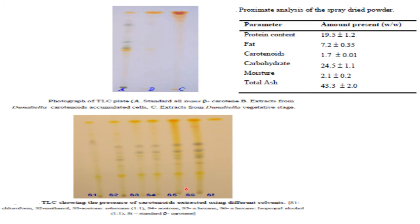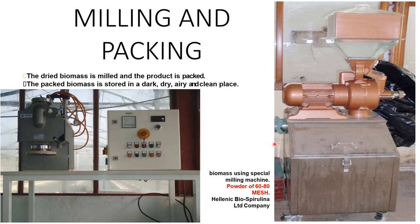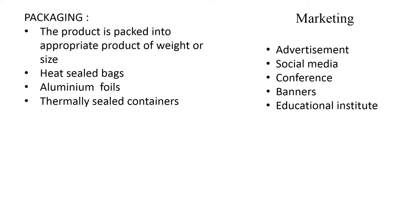This is the proximate analysis of spray-dried powder of Dunaliella, which has a major content of carbohydrate, protein at about 19.5%, and a very small amount of fat at 7.2%. The carotenoid content is about 1.7%. After drying, the Dunaliella bardawil biomass is in flake form, which is milled into fine powder using a milling machine with a mesh size of 60 to 80.